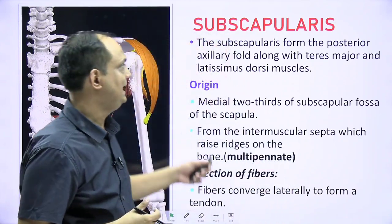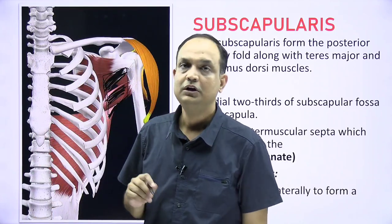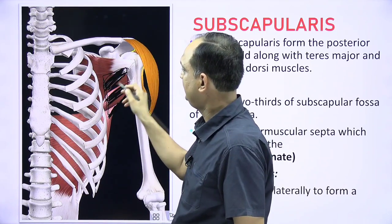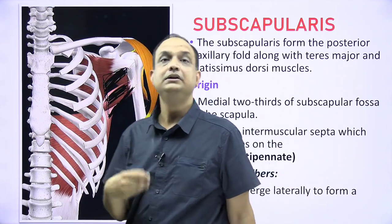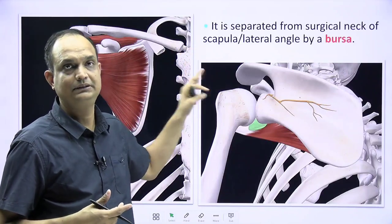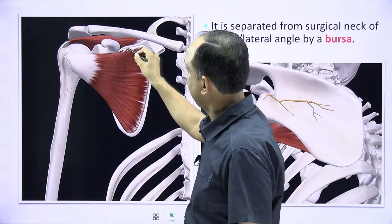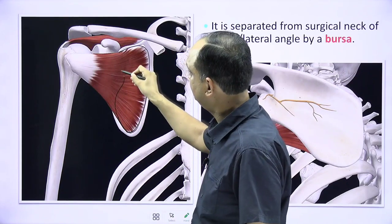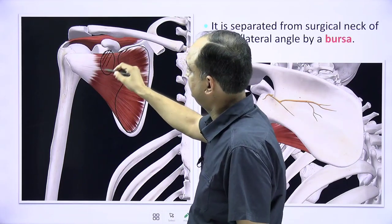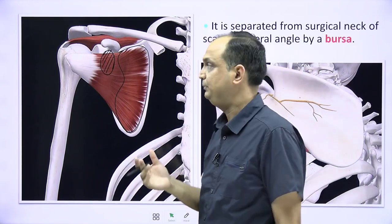All three muscles are palpable in the posterior fold of the axilla, but subscapularis is very high in the posterior fold. So when asked which muscles form the posterior axillary fold, the major contributions are from latissimus dorsi and teres major, but the inferior border of subscapularis also contributes. The origin of subscapularis from the medial two-thirds means the anterior surface of the lateral angle is a bare area.